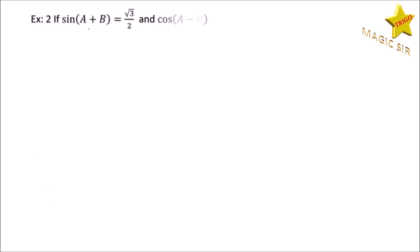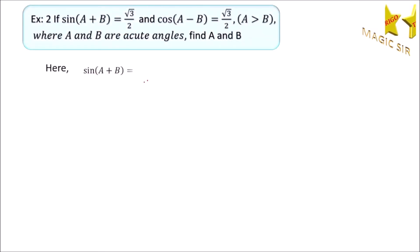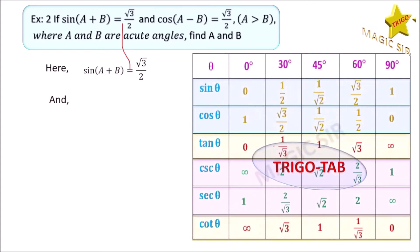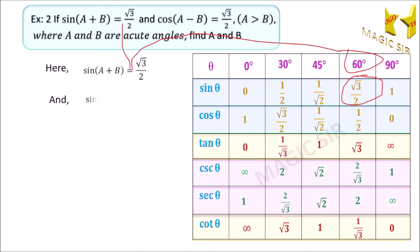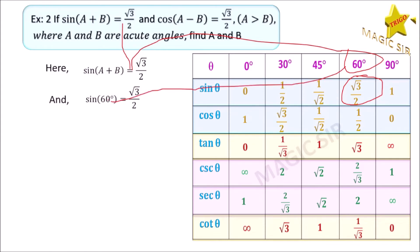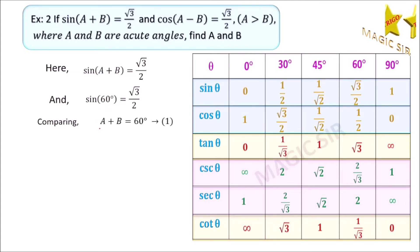Now let us take the second example. If sin(A+B) is equal to √3/2 and cos(A−B) is equal to √3/2, where A and B are acute angles, we have to find A and B, where A is greater than B. We have given that sin(A+B) is equal to √3/2. Now look at the Trigo tab — find an angle when sin theta is equal to √3/2. We have theta equal to 60 degrees. So sin 60 degrees equals √3/2. Comparing, we get sin(A+B) equals sin 60 degrees, therefore A plus B is equal to 60 degrees. This is our first equation.